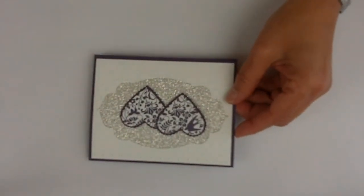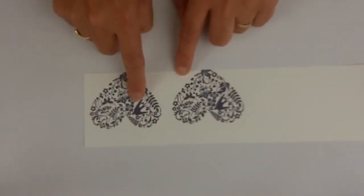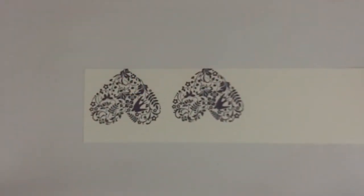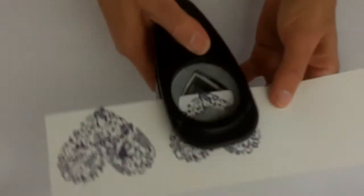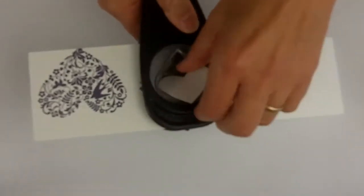So now to do these fun double hearts, we're using the stamp set You Are Loved, and in that there is this big heart. So I have stamped two of them in my Eggplant, and then I'm going to take the full heart punch and I will go in and just punch out a smaller part of it. I'm just going to do one here while we're watching. Then I took the Elegant Eggplant, a smaller piece of paper, and put it through the Big Shot with the scalloped Heart of Hearts.